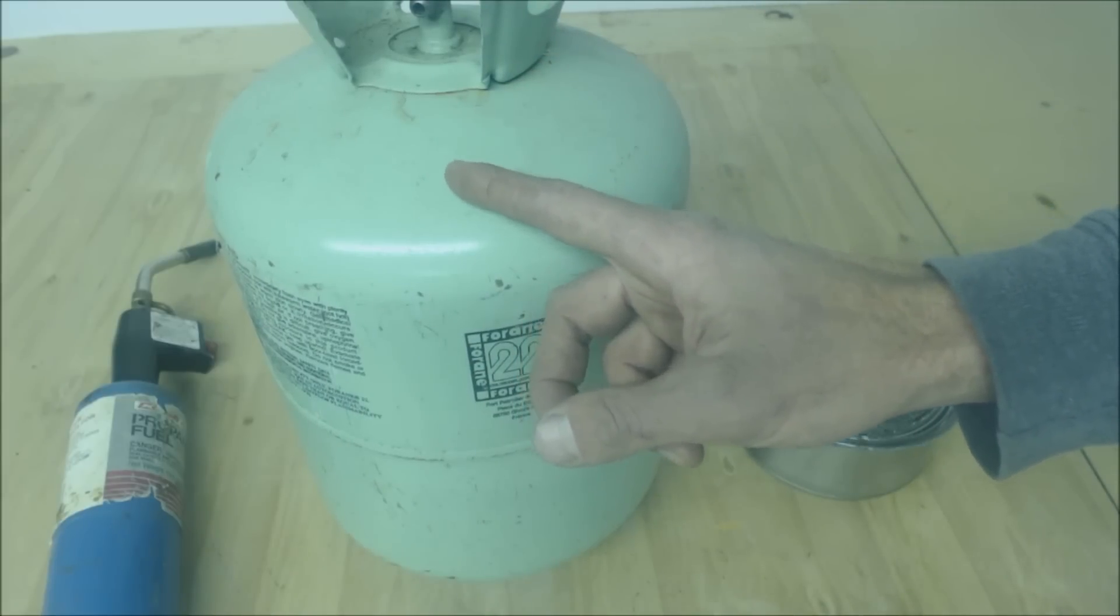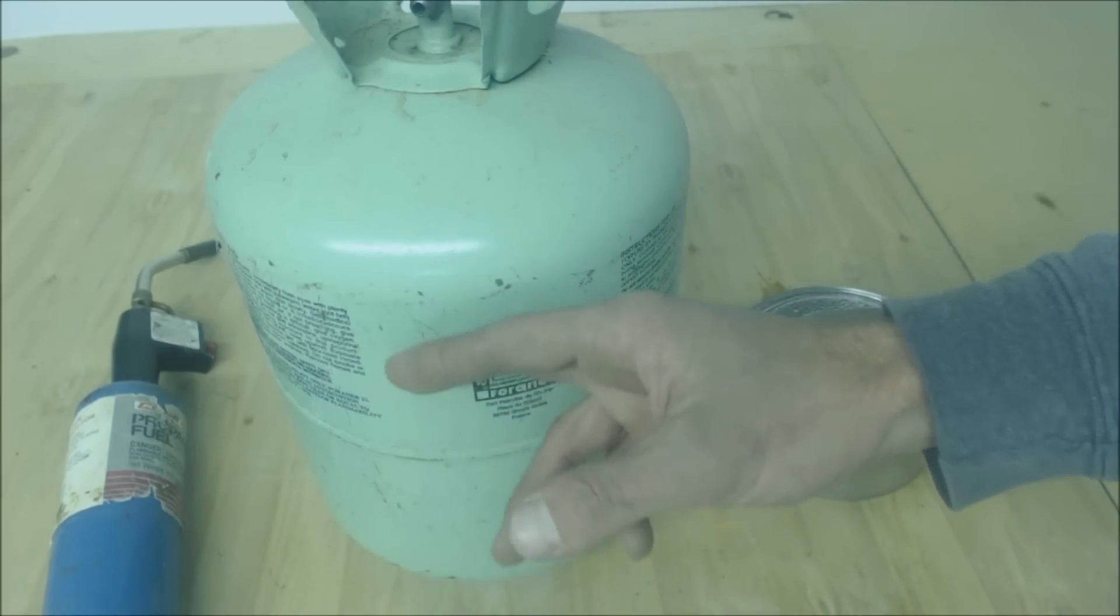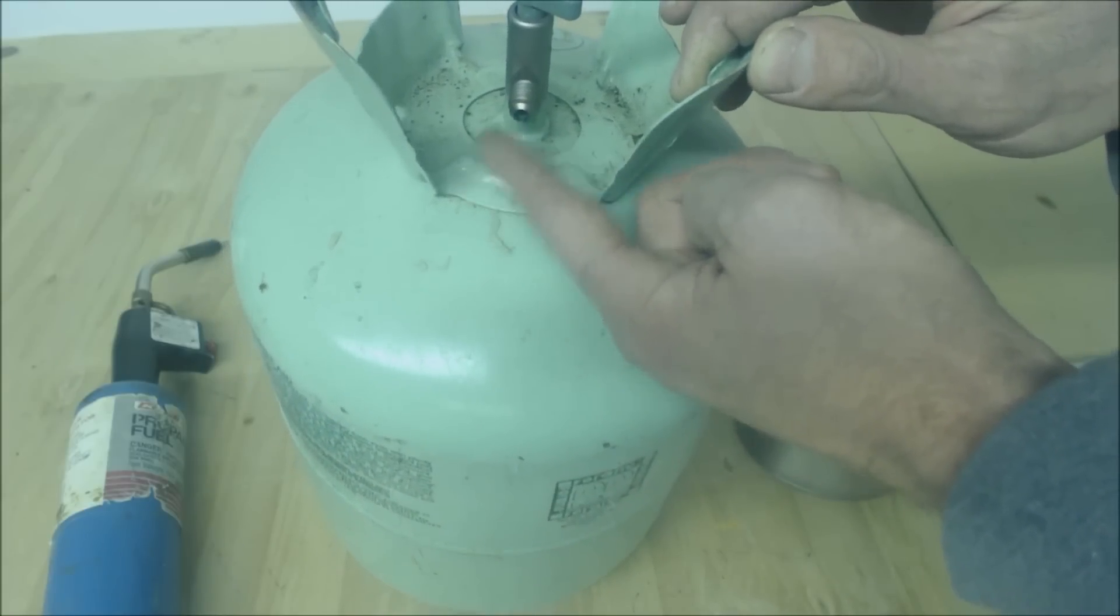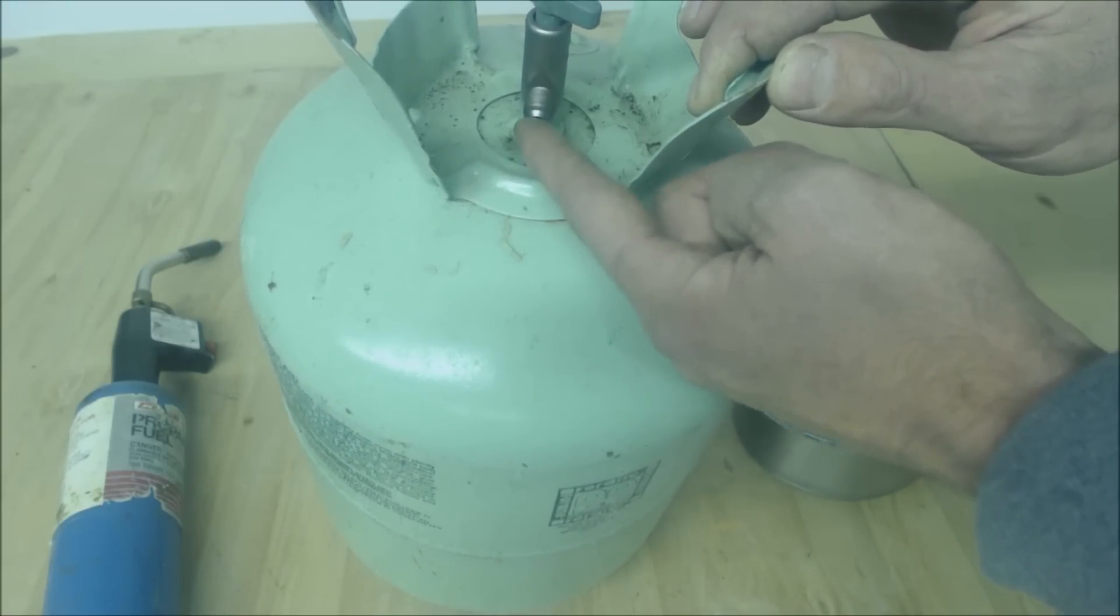Now you can follow your pressure temperature chart, and if we were to put a temp sensor on here and it read say 70 degrees, it would read right here on this tap at about 121.4 PSIG.